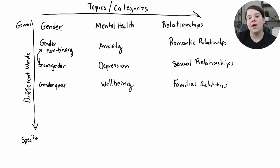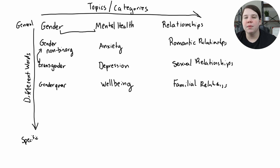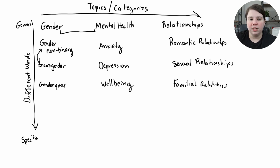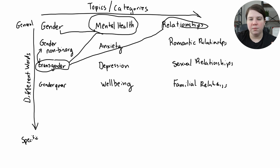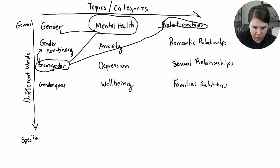Instead of just searching gender and mental health — which could lead to articles comparing mental health disorders in males versus females, which isn't what I'm interested in — now I can do different combinations. The first combination I'm going to do is transgender and mental health, and then I'm probably going to do transgender and relationships. So I'm going to jump over to Google Scholar now.